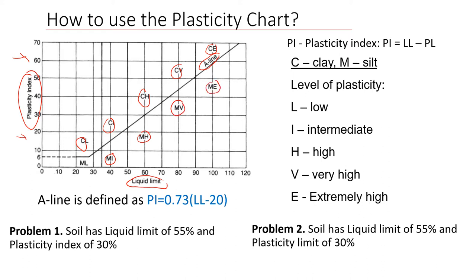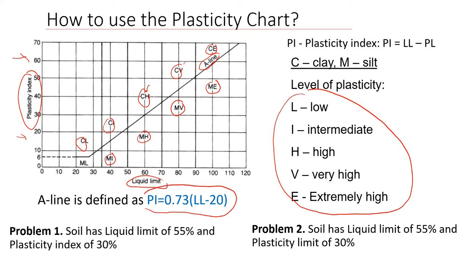We also have a few more symbols such as L, I, H, V, and E. These symbols show the level of plasticity, starting from low (L) to intermediate, high, very high, and extremely high. This is the relationship between plasticity index and liquid limit that we use to determine the A-line.